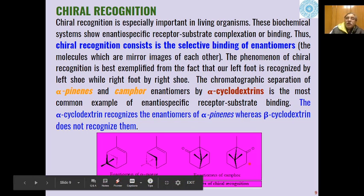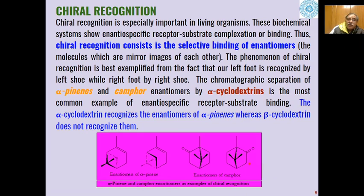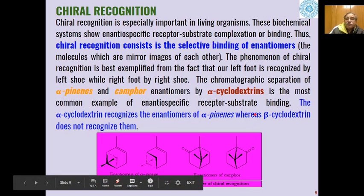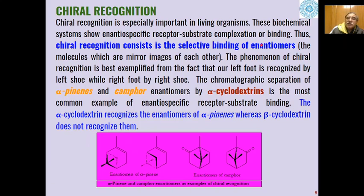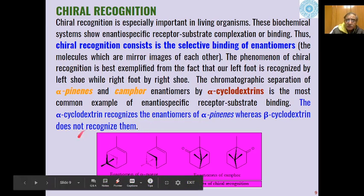Another aspect is chiral recognition. Chiral recognition is different from molecular recognition in that in chiral recognition, selective binding of enantiomers takes place, whereas in molecular recognition, selective binding of molecules takes place. That is the difference between the two.